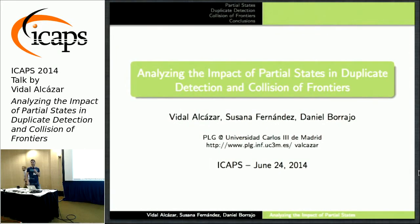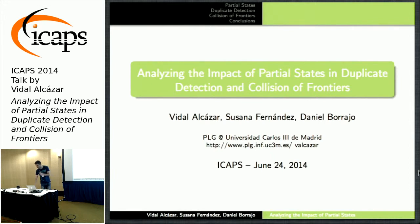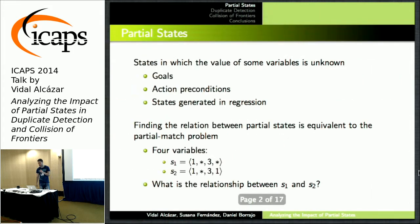My name is Vidal Alcazar, and this is a joint work with Susana Fernandez and Daniel Borrejo. We're going to talk about the impact of partial states in two particular cases: duplicate detection and collision of frontiers.